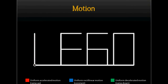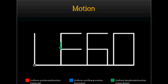As you can see, there is the motion diagram overall. The red arrow explains the uniform accelerated motion, the blue arrow explains the uniform rectilinear motion, and the green arrow explains the uniform decelerated motion.